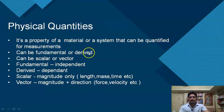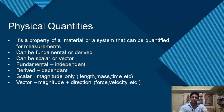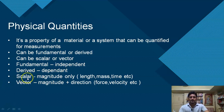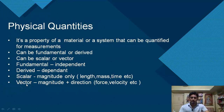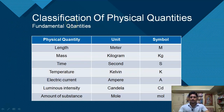Physical quantities can be fundamental or derived, and they can be scalar or vector. A fundamental physical quantity is independent in nature — it does not depend on any other physical quantity for its expression. A derived quantity is a dependent quantity that depends on other physical quantities. Scalar quantities can be expressed with magnitude only — for example, length, mass, and time. Vector quantities require both magnitude and direction for complete expression — for example, force, velocity, and momentum.